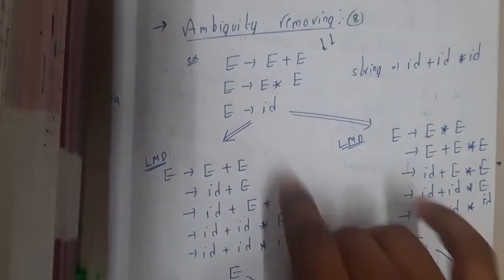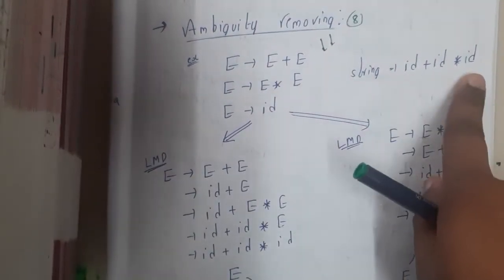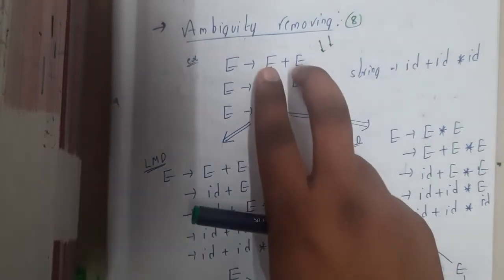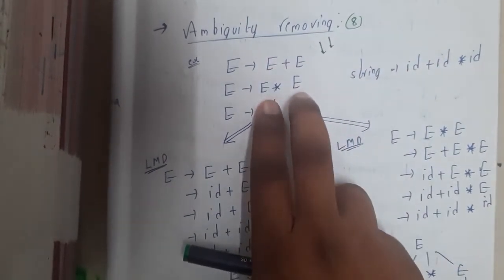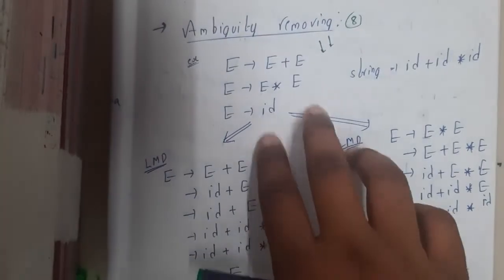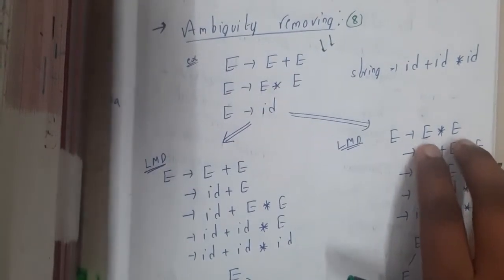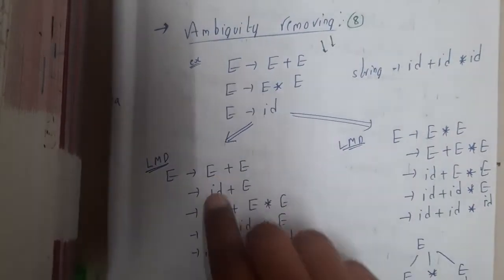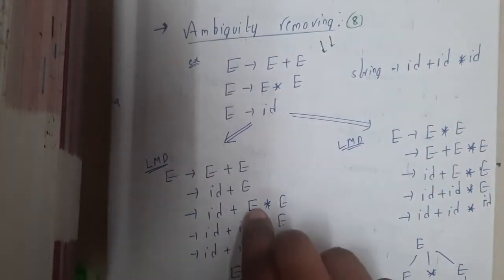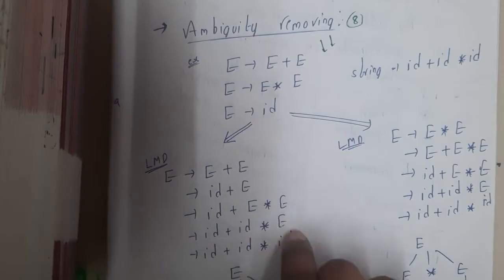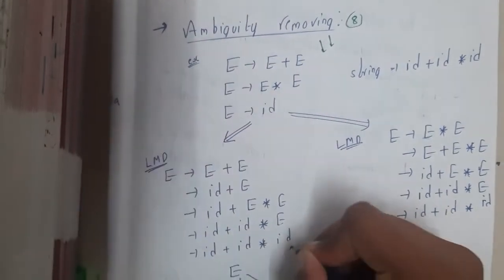Even by observing we will be getting an idea. So this is our string, right? I have two options: I can directly start from E+E or E×E. The option is in my hands. Once I took E+E and another time I took E×E. I used a leftmost derivation. Here I changed this E into id, this E I expanded, again I changed to id, this E again I changed to id. So here I got it in one way.